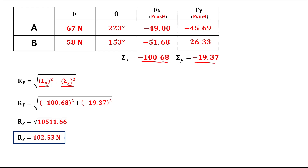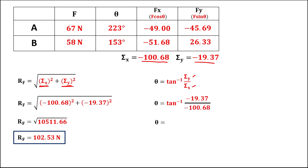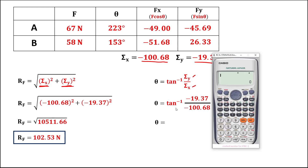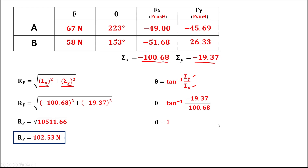To find the angle, we use the formula: theta equals the inverse tangent of the summation of y over the summation of x. Substituting: shift tangent of negative 19.37 divided by negative 100.68. Therefore, theta is equal to 10.89 degrees.